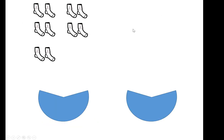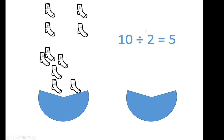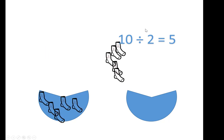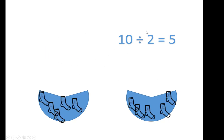We could also break the 10 into parts differently. 10 divided into 2 groups will have 5 in each one. 10 divided by 2 is 5. I can take 5 away from 10 two times.